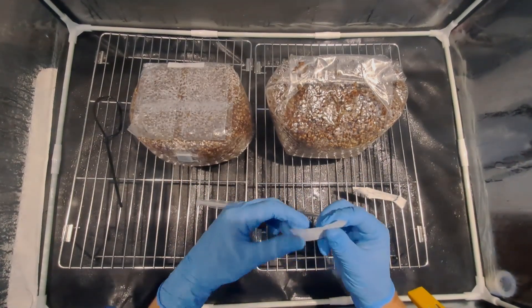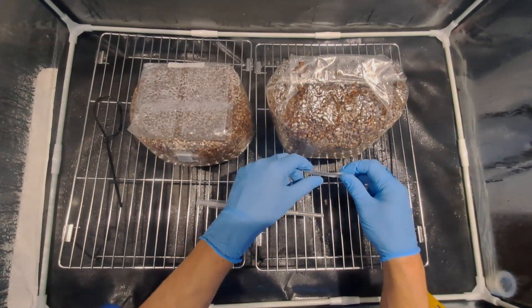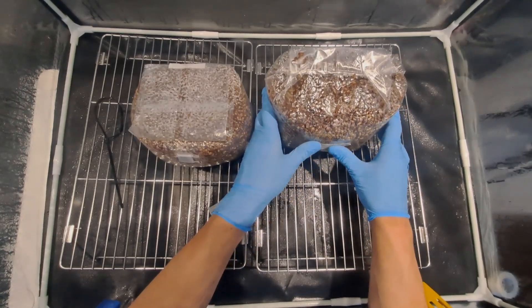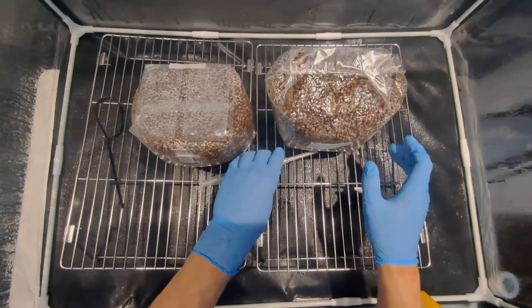The second grain jar doesn't have an injection port so I'm going to put some micropore tape where I want to inject. I'm then going to spray the micropore tape with alcohol.